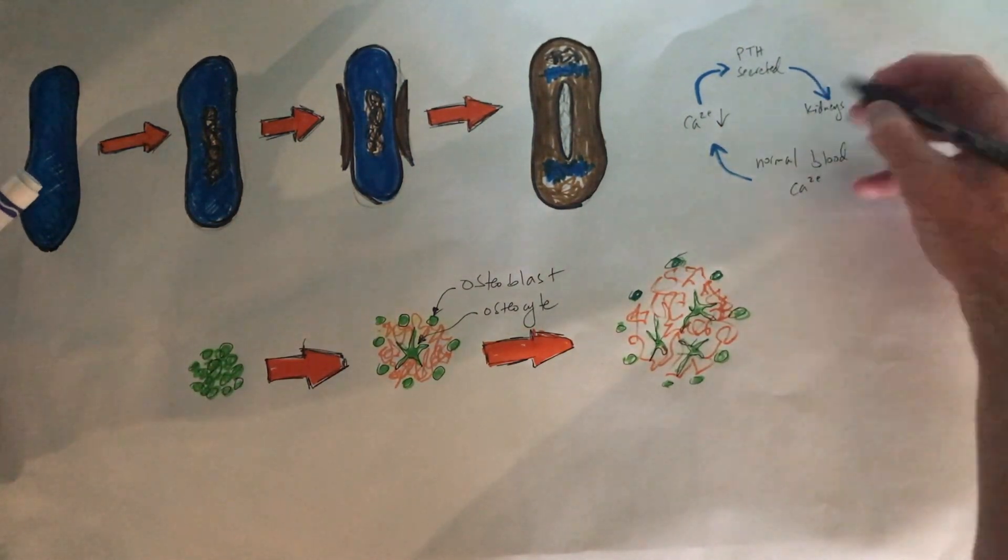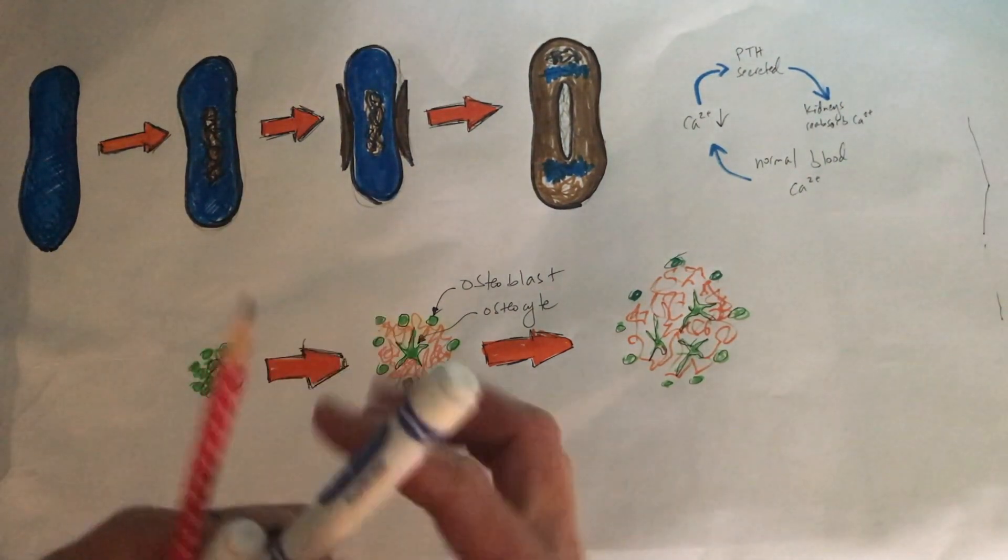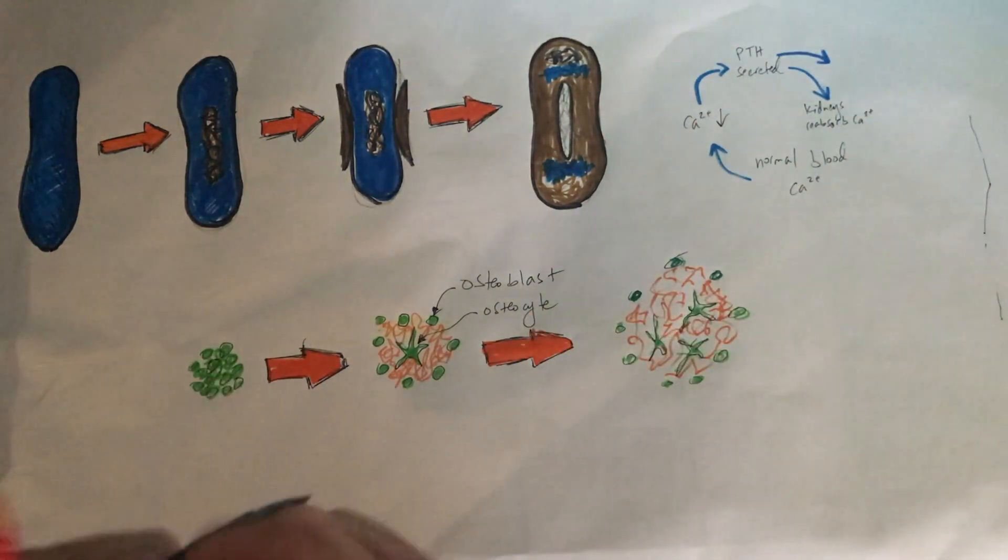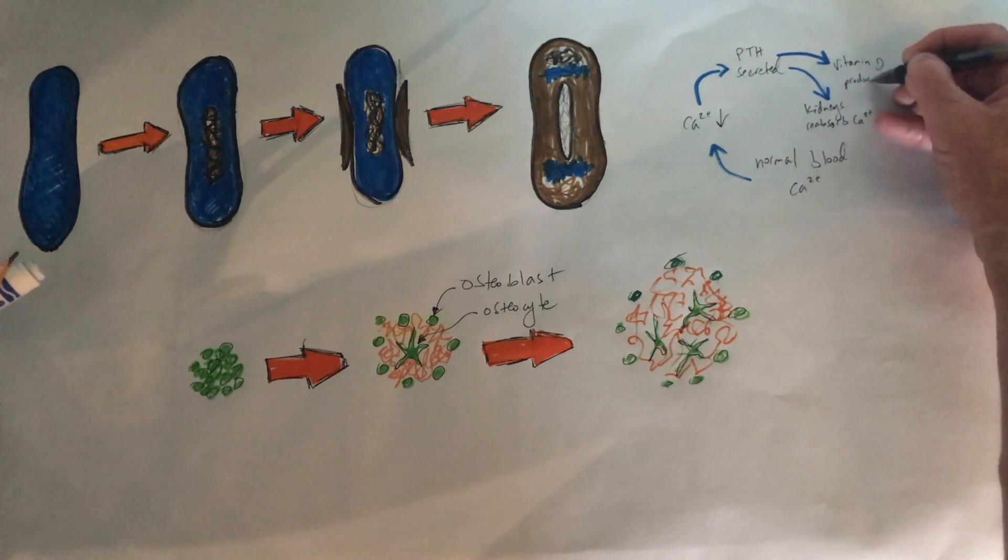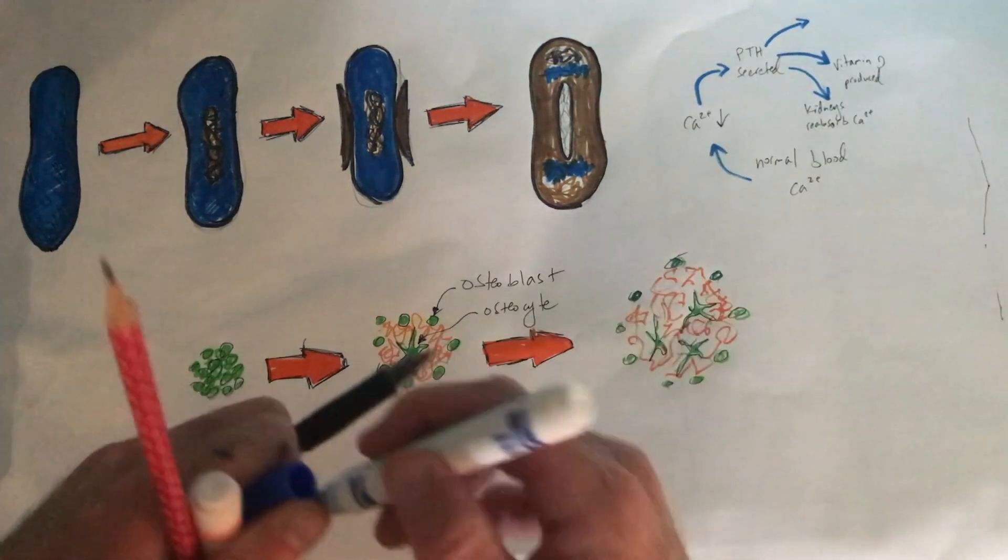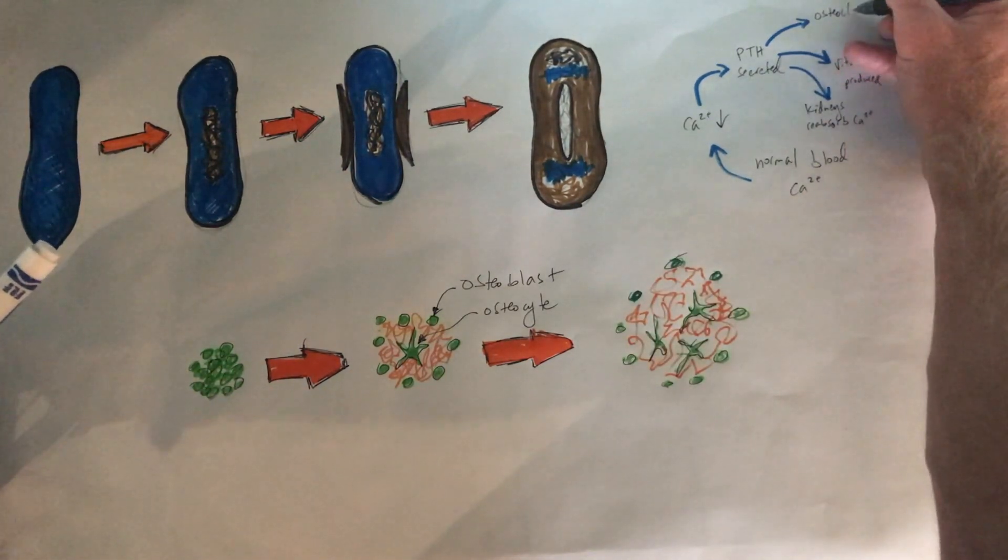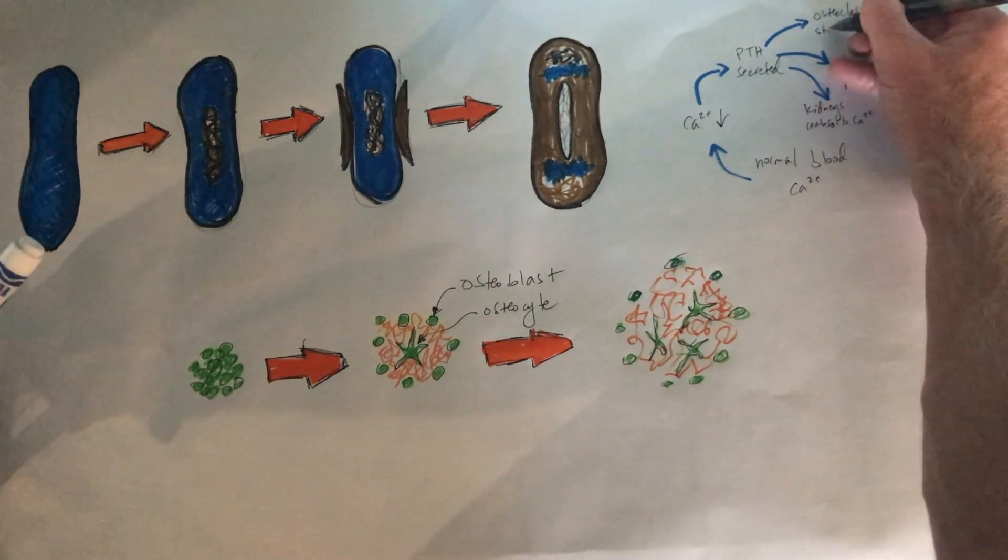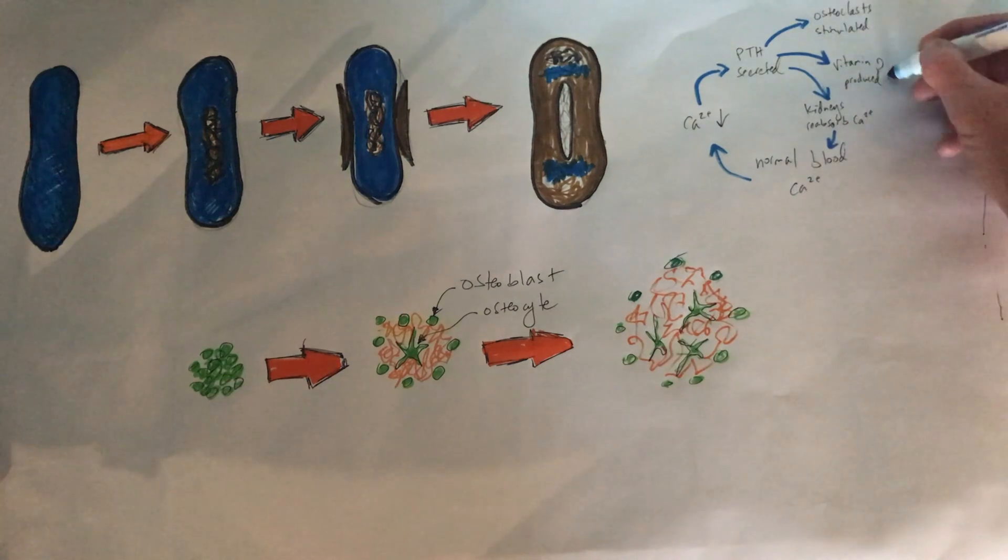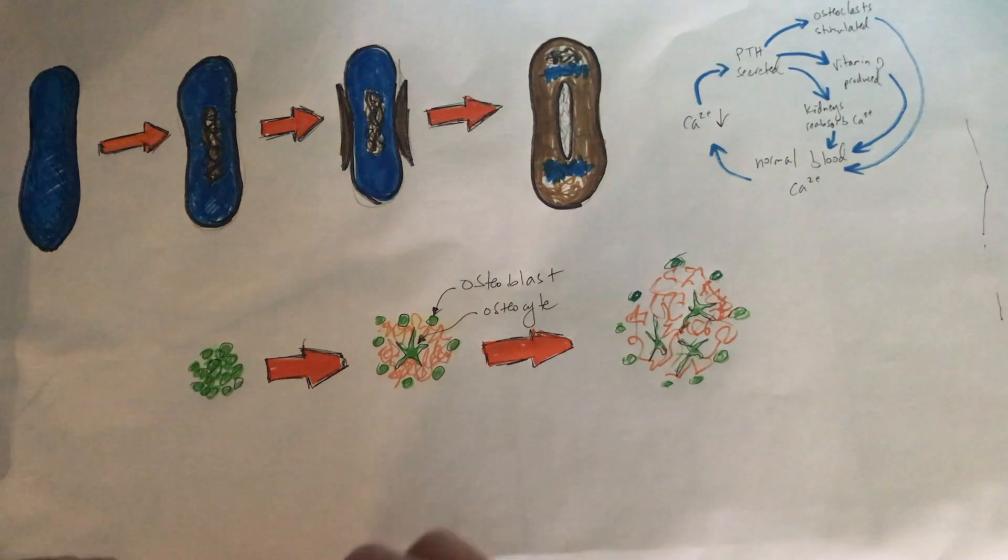It does three different things. Number one, it tells the kidneys to reabsorb calcium from the urine. That makes sense because the last thing we need to do if calcium is low is to release it into our urine. It tells the kidney tubules, the renal tubules, to reabsorb calcium. Second, it stimulates the production of vitamin D because vitamin D is required for our digestive system to absorb calcium from our diet. That's going to increase the amount of calcium by allowing us to absorb calcium from the foods we eat. Third, it stimulates osteoclasts. Parathyroid hormone, by stimulating osteoclasts, will—remember that osteoclasts break down bone—increase how much bone is broken down. All that calcium phosphate stored in bone tissues will then get released into the body fluids, and that's going to increase the concentration of calcium.